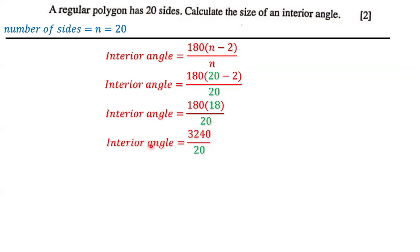So that means the interior angle is going to be equal to 3,240 divided by 20, which equals 162 degrees. So the size of this interior angle is 162 degrees, given that the number of sides of this regular polygon is 20.